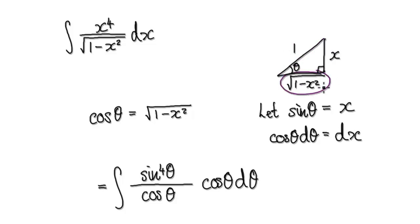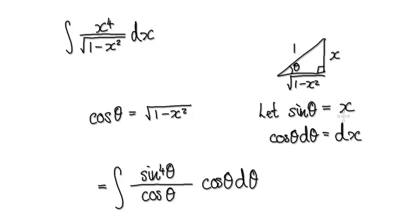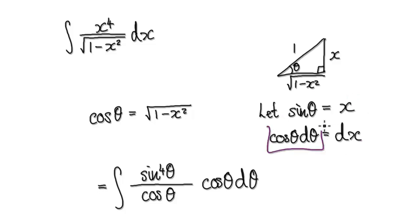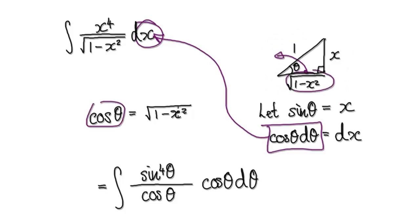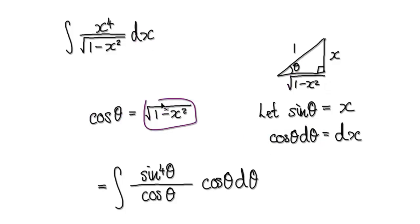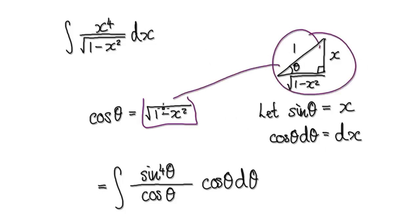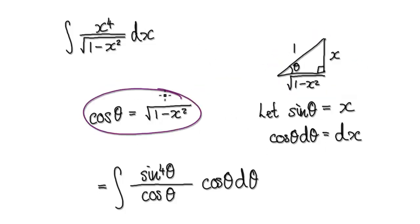Remember sine theta is opposite over hypotenuse, so sine theta equals x. Differentiate this, and that will give you dx. Looking at the same triangle, cos theta is the adjacent over the hypotenuse, which is simply square root of 1 minus x squared. So from the triangle you can obtain this.